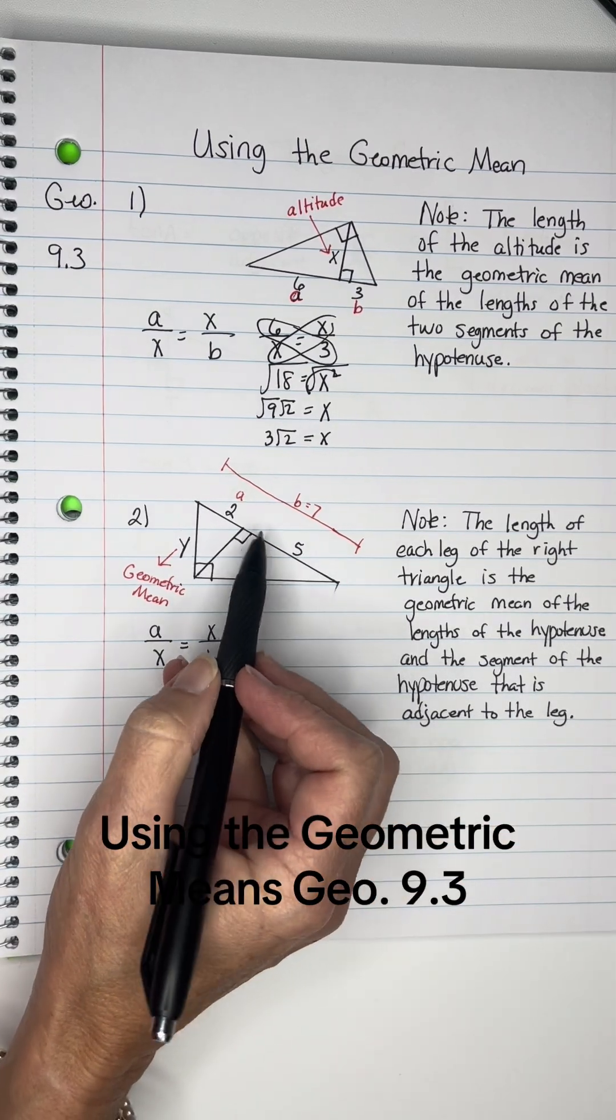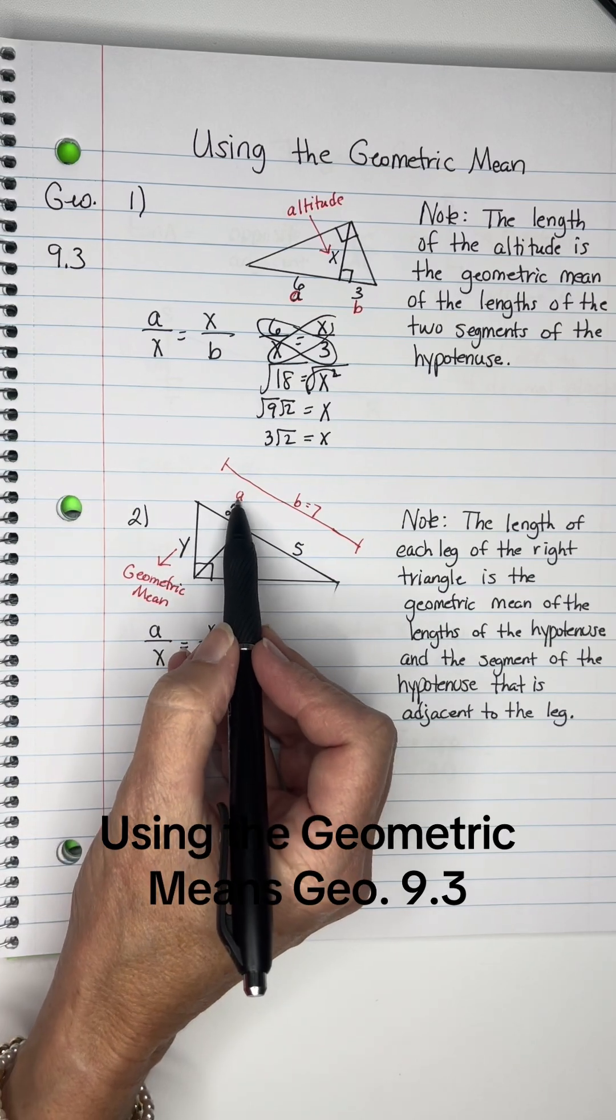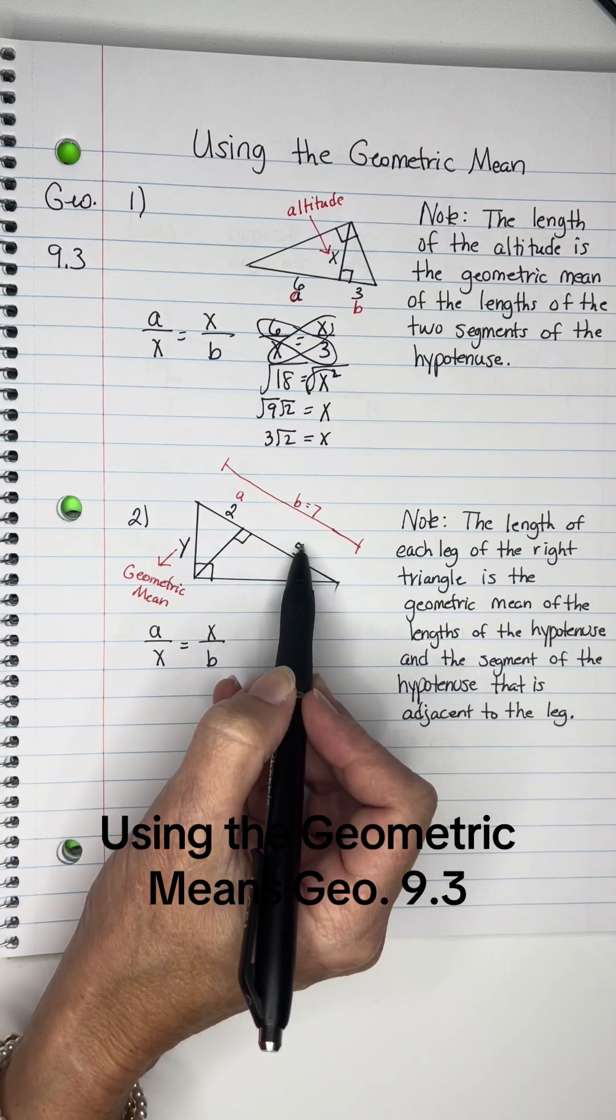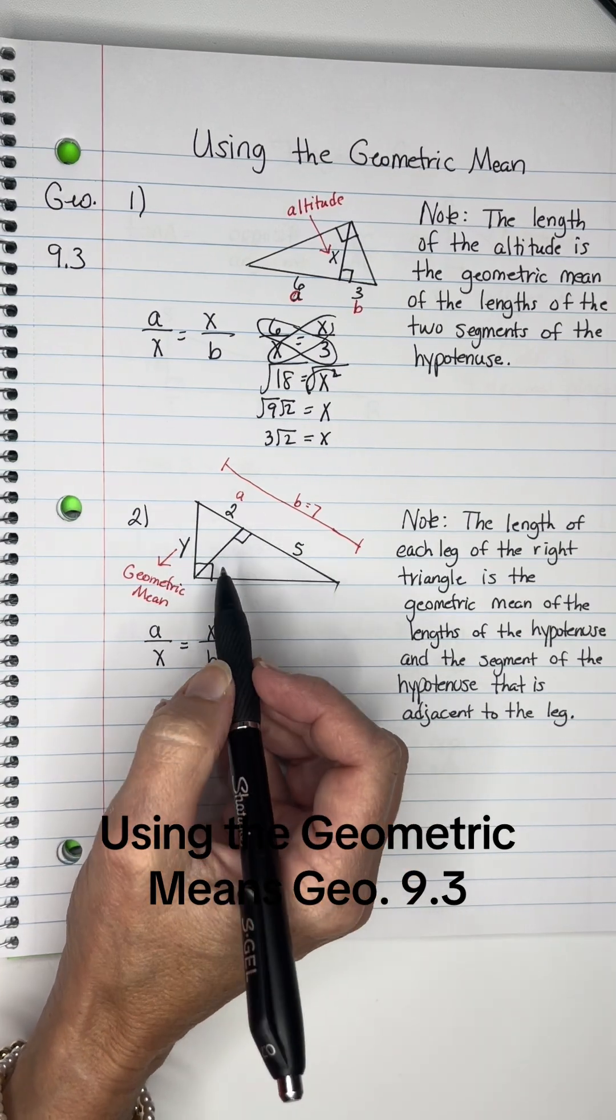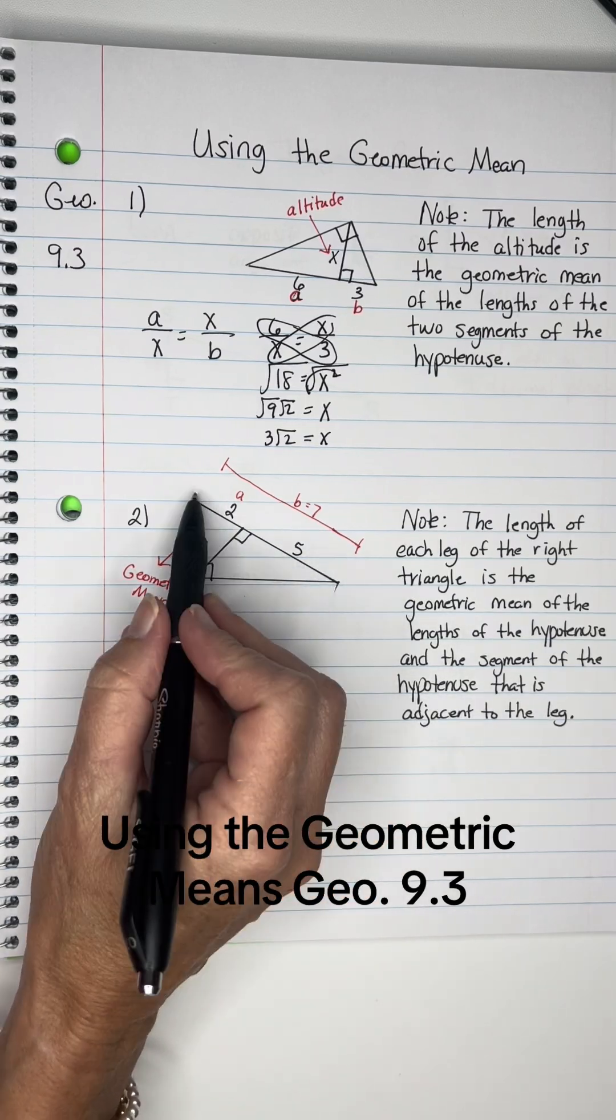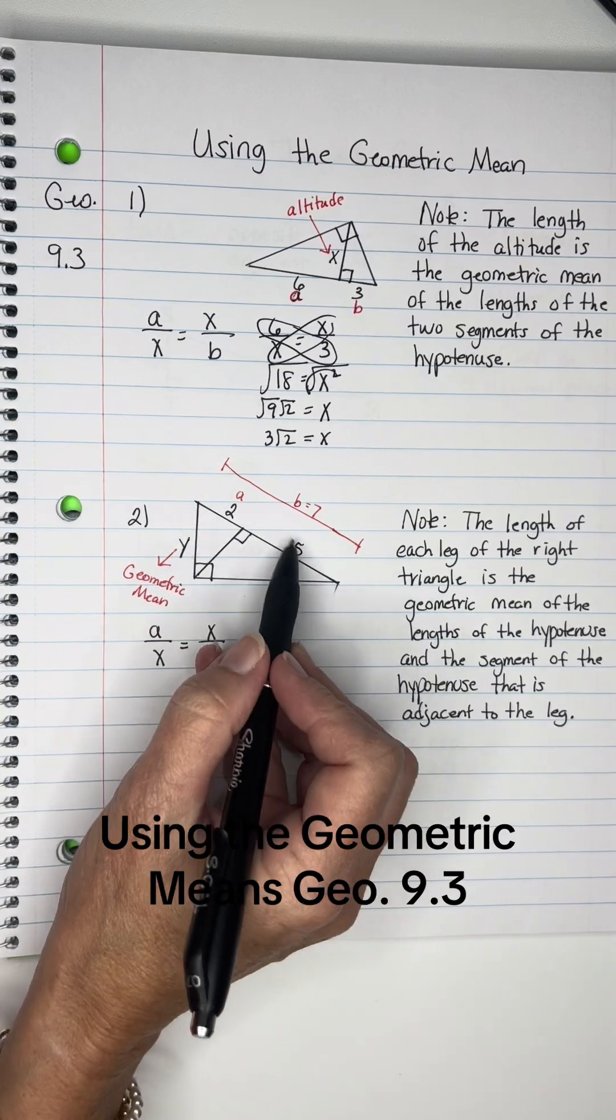So what you do with this is the A is going to have to be the one adjacent to the one you're looking for. If they were looking for this one, I'd have to use the 5. And then the B is going to be the entire hypotenuse. So you will have to add the two together. So 5 plus 2 is 7.